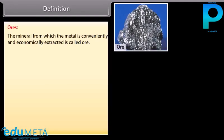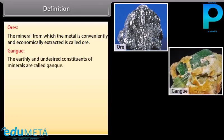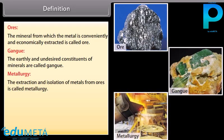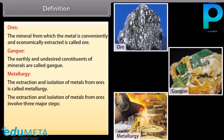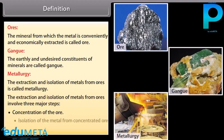Key definitions: Ores — the mineral from which the metal is conveniently and economically extracted is called ore. Gang — the earthly and undesired constituents of minerals are called gang. Metallurgy — the extraction and isolation of metals from ores is called metallurgy. This involves three major steps: concentration of the ore, isolation of the metal from concentrated ore, and purification of the metal.